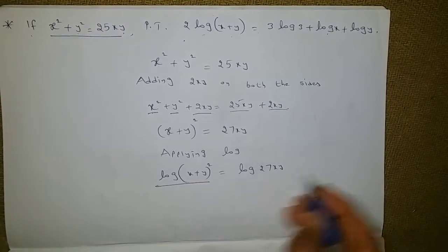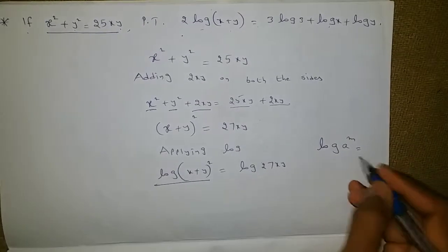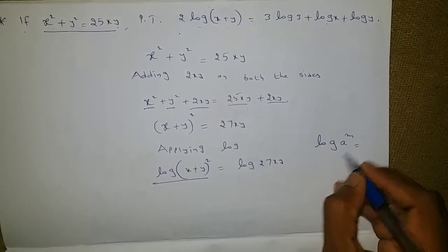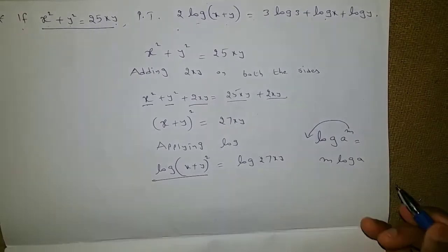Now on the left side, we use the log power formula: log(a^m) = m log(a). The power will come to the front.